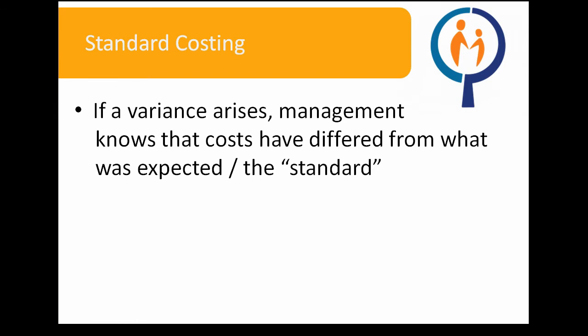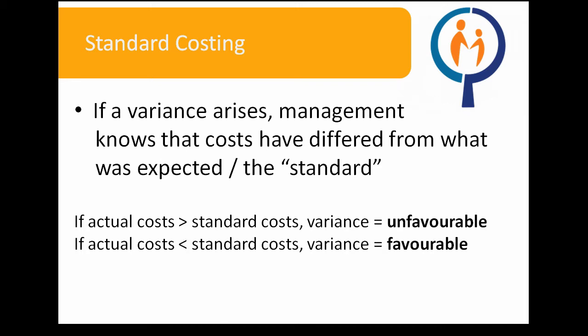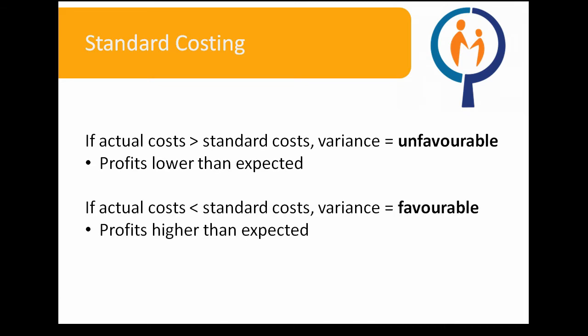If a variance arises, management knows that costs have differed from what was expected or the standard. If actual costs turn out to be greater than standard costs, the variance is unfavorable. If actual costs turn out to be less than standard costs, the variance is favorable. If the variance is unfavorable, this tells management that if all other costs stay constant, the company's profit will be less than expected. If the variance is favorable, this tells management that if all other costs stay constant, the company's profit will be higher than expected.